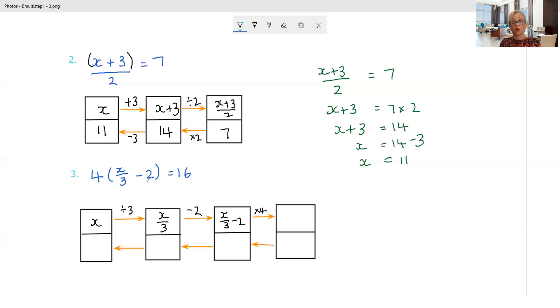How do we know the whole lot's been multiplied by 4? Because we've got brackets there. So we've got 4 lots of x on 3 minus 2. And we know that that equals 16.